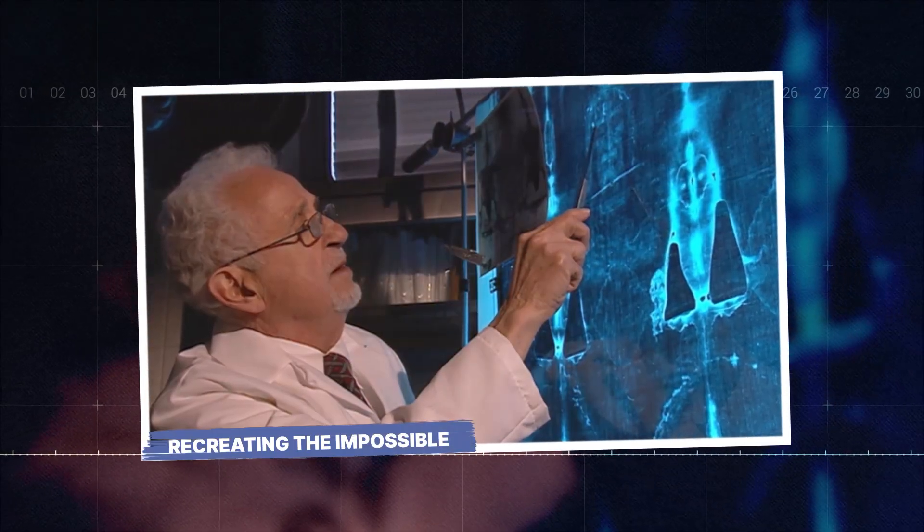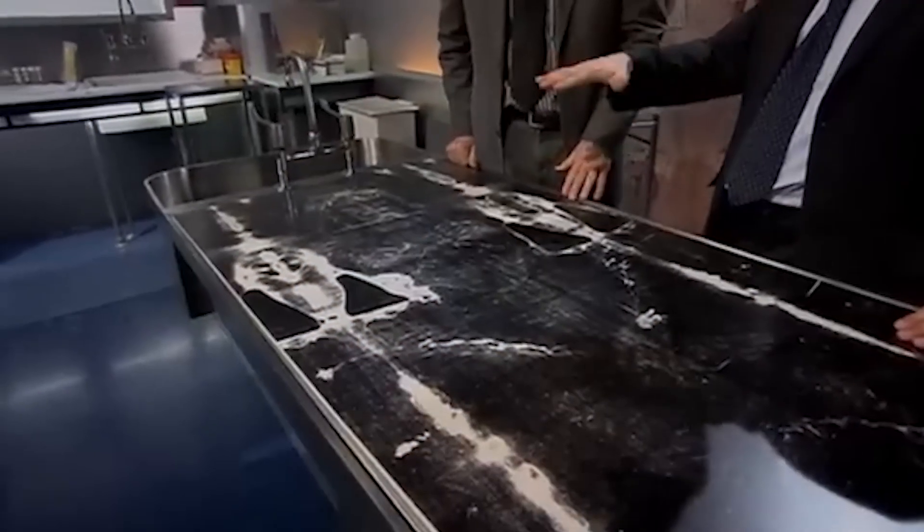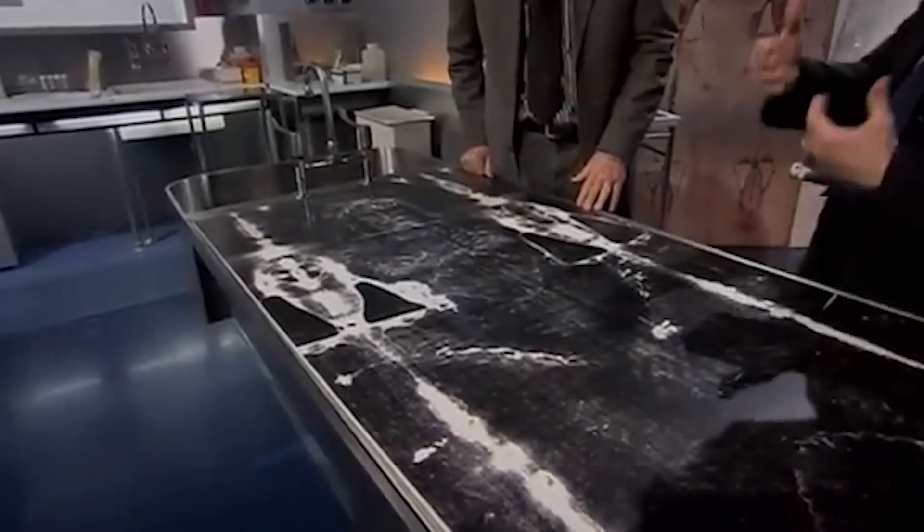So, if it's not a medieval fake, what is it? The AI discovery forces us to look at the how. How was this image created? We know it's not paint or a scorch. No artist could create a photographic negative with perfect 3D information at a depth of 200 nanometers. It's just not possible even today. This has led to one of the most fantastic theories, one that scientists have kicked around for years but could never prove, the burst hypothesis.